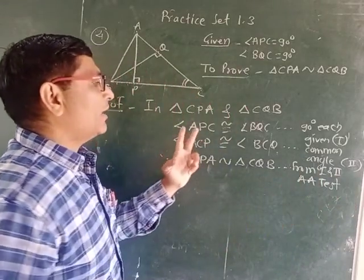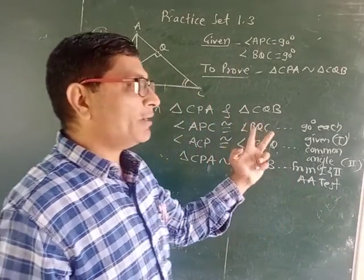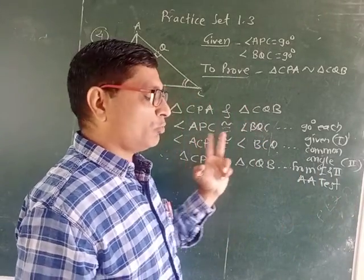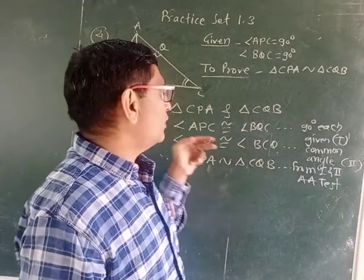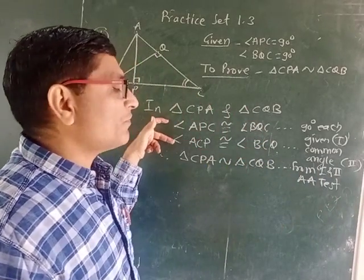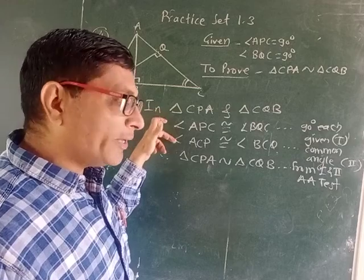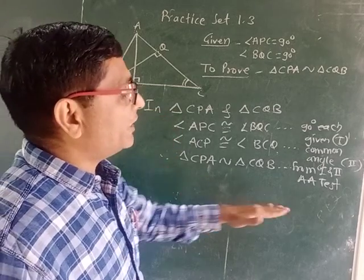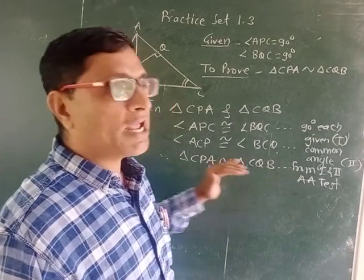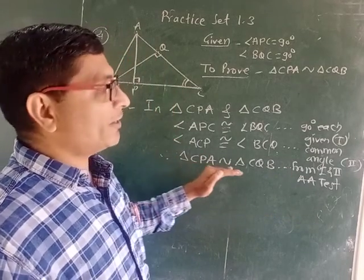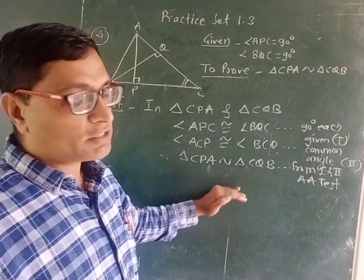Here, angle CPA is congruent to angle CQB, and angle ACP is congruent to angle BCQ. Therefore, two pairs of angles are congruent, so by the AA test these two triangles are similar.